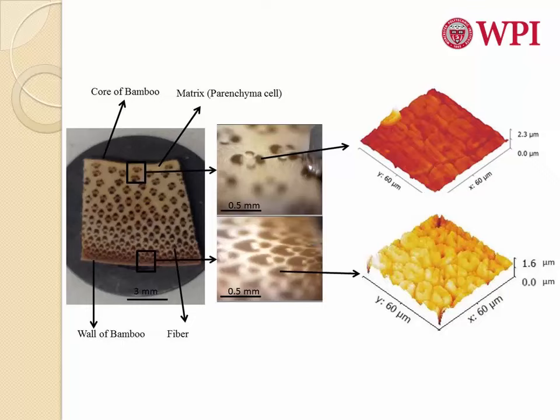Bamboo is a composite of parenchyma cells and fibers. The parenchyma cell is a matrix for the fiber. As you can see, the density of these fibers increases as we go from the core to the wall of the bamboo.